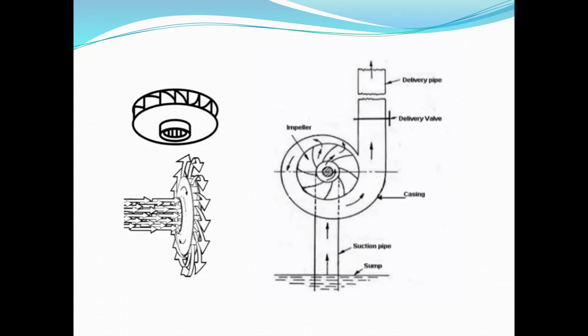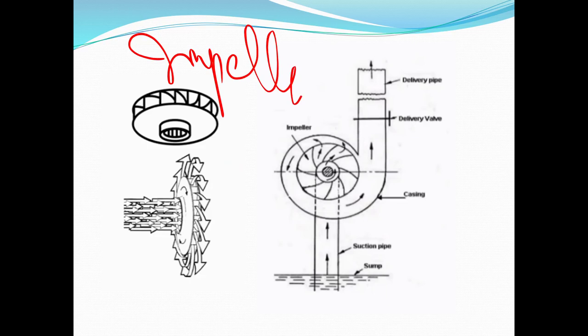First, we have the impeller. What is the impeller? This is the circular disc. The impeller is a circular disc with blades and vanes. These are the curved vanes.